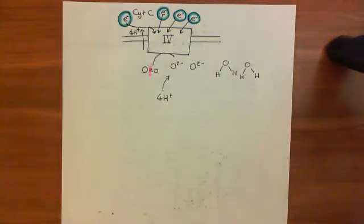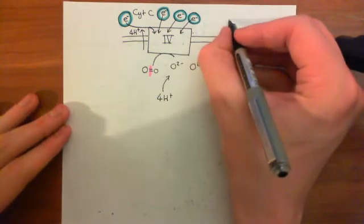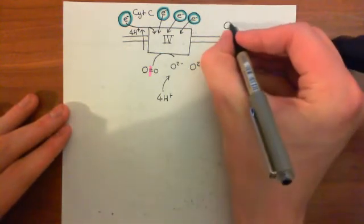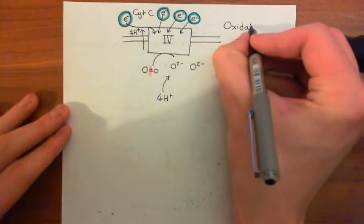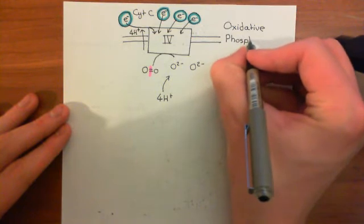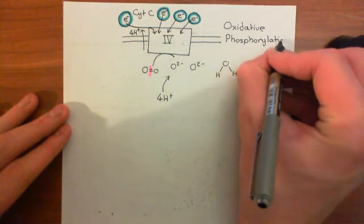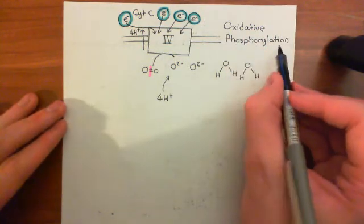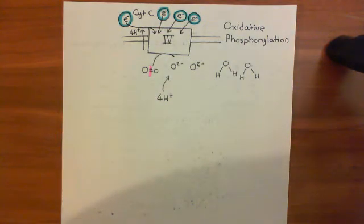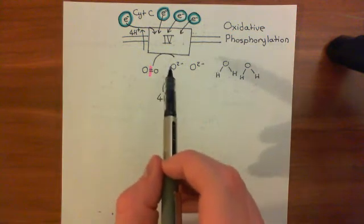This is the complex that actually uses oxygen. This is why this entire process is known as oxidative phosphorylation. It's dependent on oxygen — without oxygen it cannot occur. It's called phosphorylation because we're going to phosphorylate ADP into ATP. So it's the phosphorylation of ADP to ATP that is dependent on oxygen, and it's complex 4's action that is dependent on oxygen.